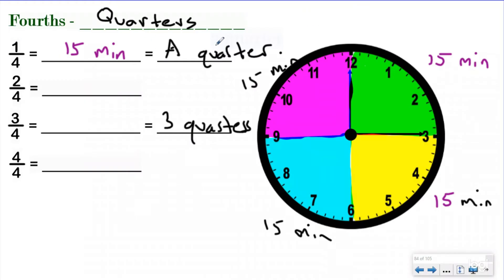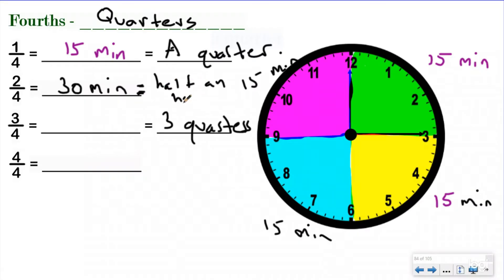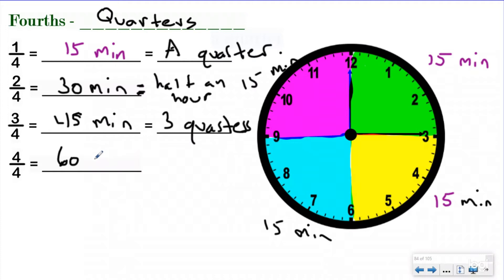So one-fourth or one quarter of an hour is 15 minutes. If you have two quarters — the green and the yellow part together — that's going to be 30 minutes, and that's actually equal to the equivalent fraction one-half, so you would say that is half an hour. If you have three-fourths or three quarters, you have 15, 30, 45. So three quarters of an hour is 45 minutes. And then obviously if you have four-fourths, that's equal to two halves, which is equal to one hour.